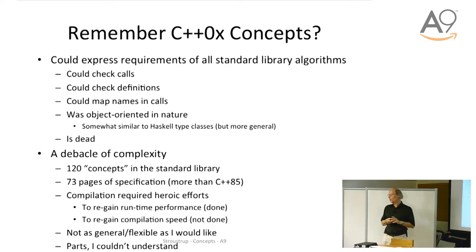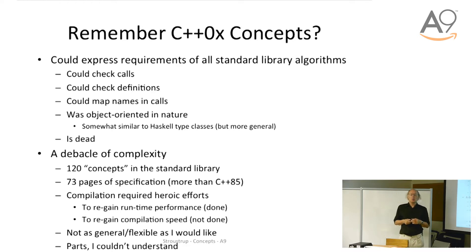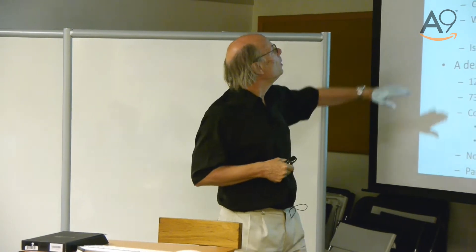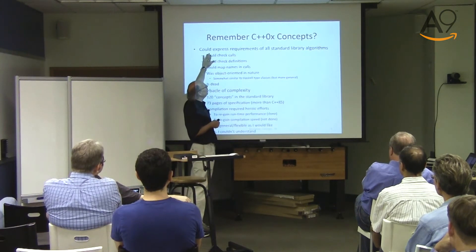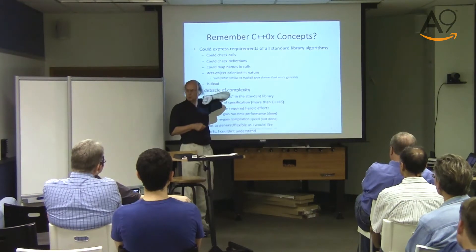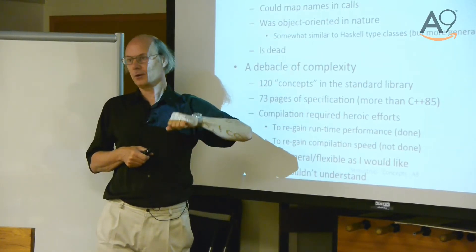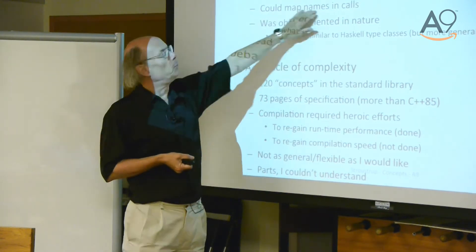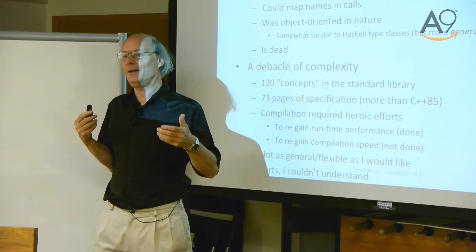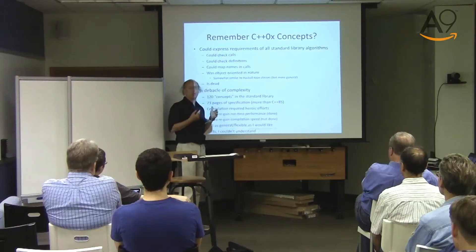Some of you will remember C++0x concepts. From a language point of view, let's go back and look at why that was a debacle. We could express the requirements of all the standard library algorithms and more. We could check the calls and got reasonably good error messages - not as good as I'd expected, but good. We could check the definitions: if you used plus-one in find instead of plus-plus, you would get caught. You could map names and calls so that if I had a data type where things were called name and value, and an implementation that assumes first and second, I can map this.